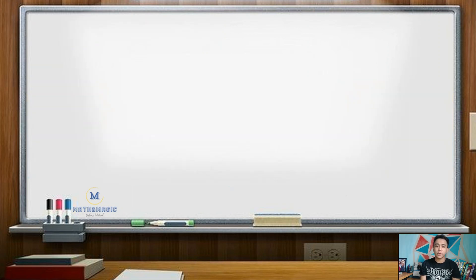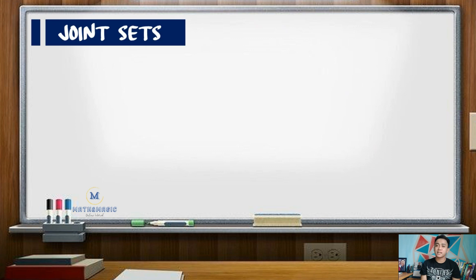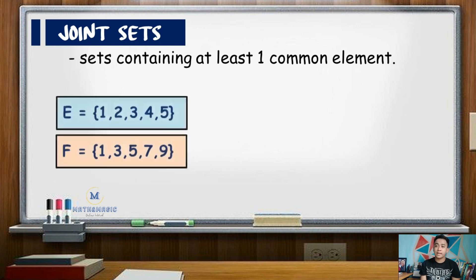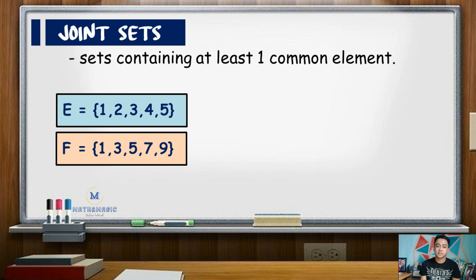Now for joint and disjoint sets, two sets are said to be joint if those sets contain at least one common element. Sets E and F below are examples of joint sets. Set E with elements 1, 2, 3, 4, and 5 are the first five counting numbers, while set F has elements 1, 3, 5, 7, and 9 or the first five positive odd numbers.